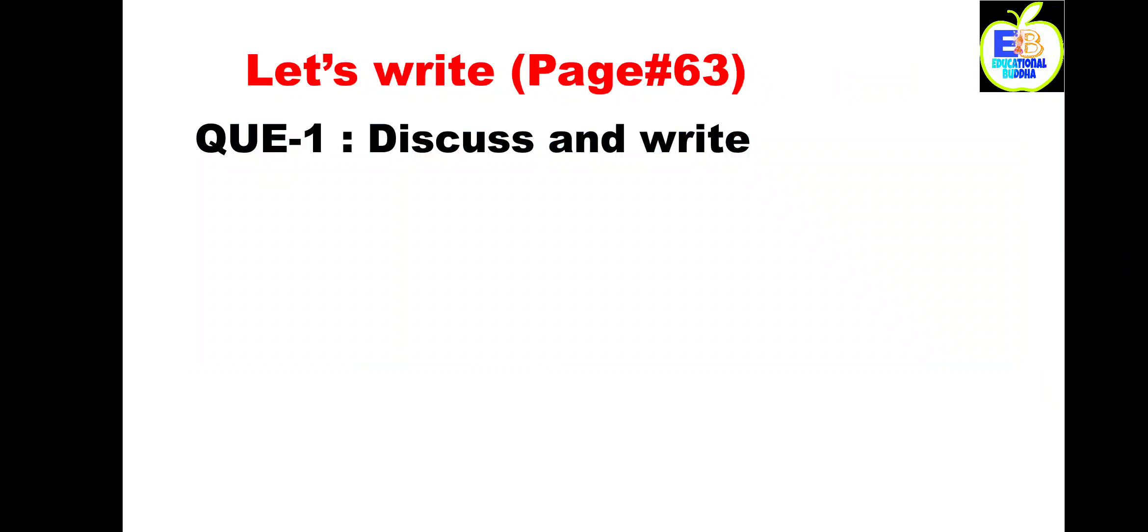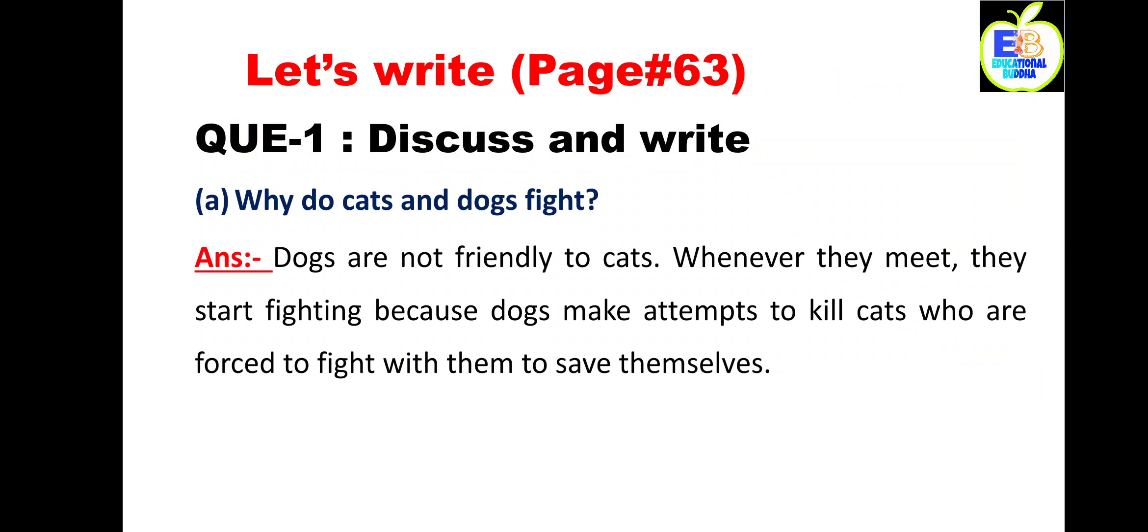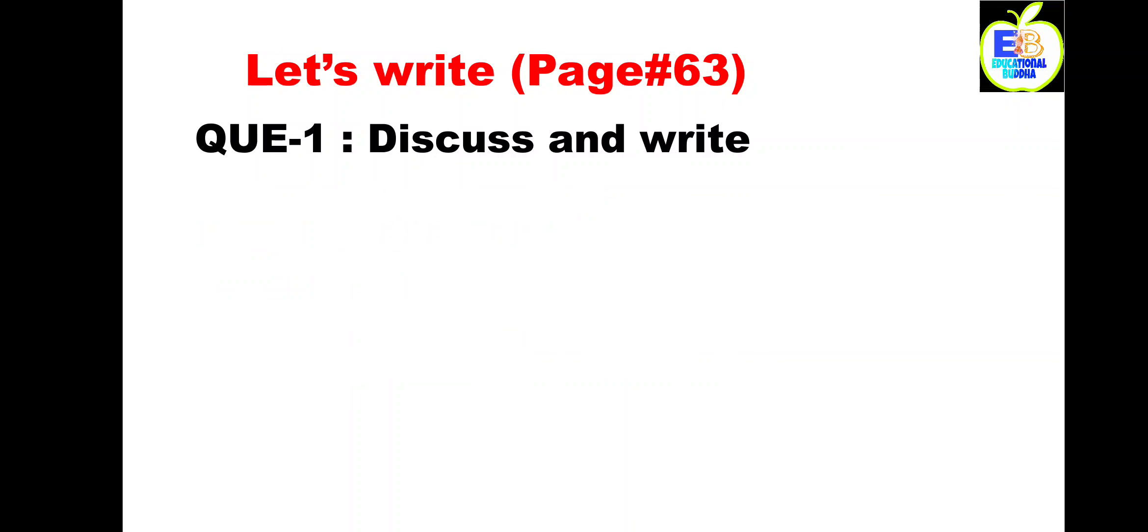Next question given on page number 63 of our Marigold of class 4th. Title is 'Let's Write.' Question number one: discuss and write. Question A: why do cats and dogs fight? Answer: dogs are not friendly to cats. Whenever they meet, they start fighting because dogs make attempts to kill cats who are forced to fight with them to save themselves. Next question, question B: why do we walk across the road, not run? Answer: we walk across the road and not run because we might meet with an accident.